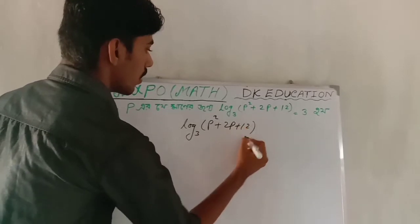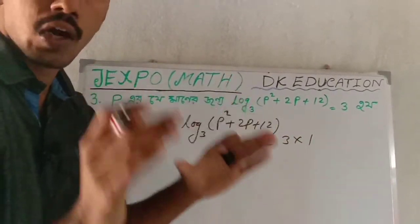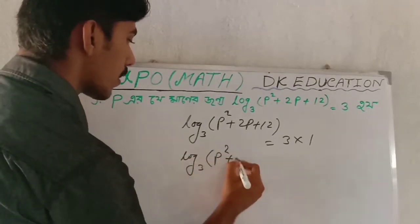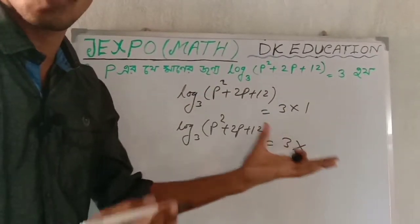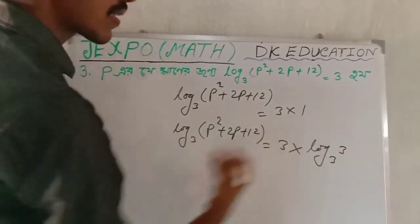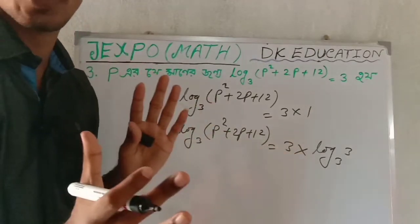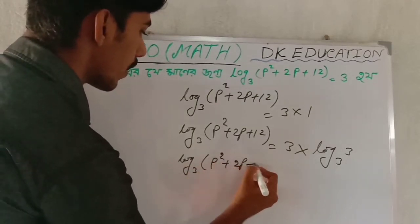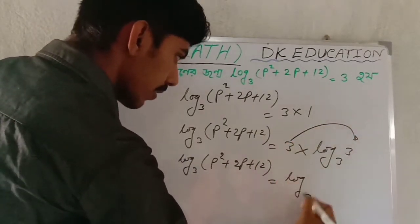9x4 plus 2l. Log base 3 of p squared plus 2p plus 2l — 3 times 1 comes to 1. The base and parts are the same: 1. Log base 3 of p squared plus 2p plus 2l times 3.